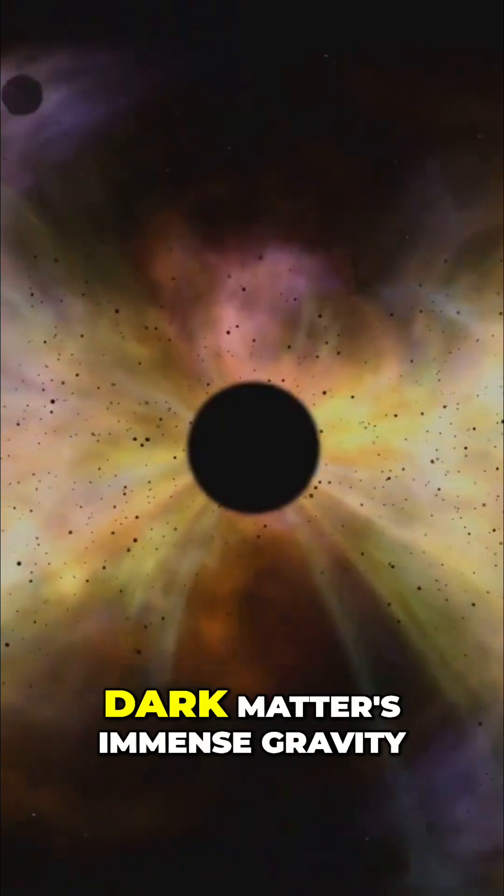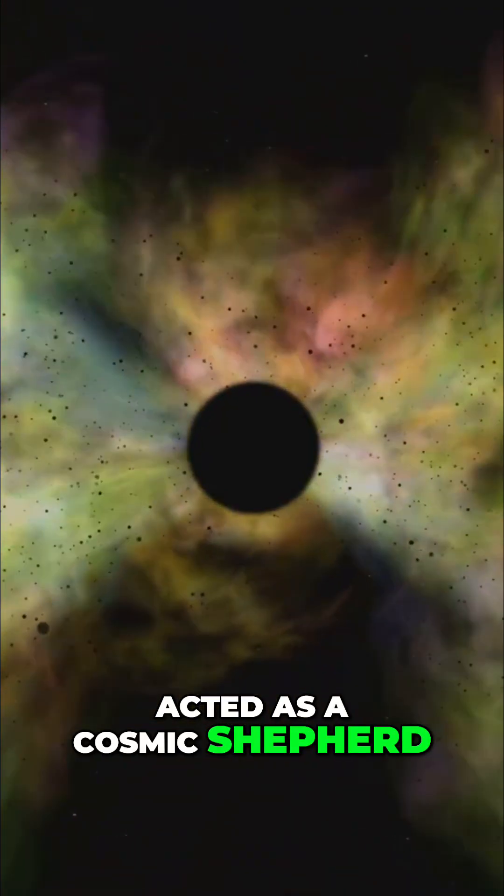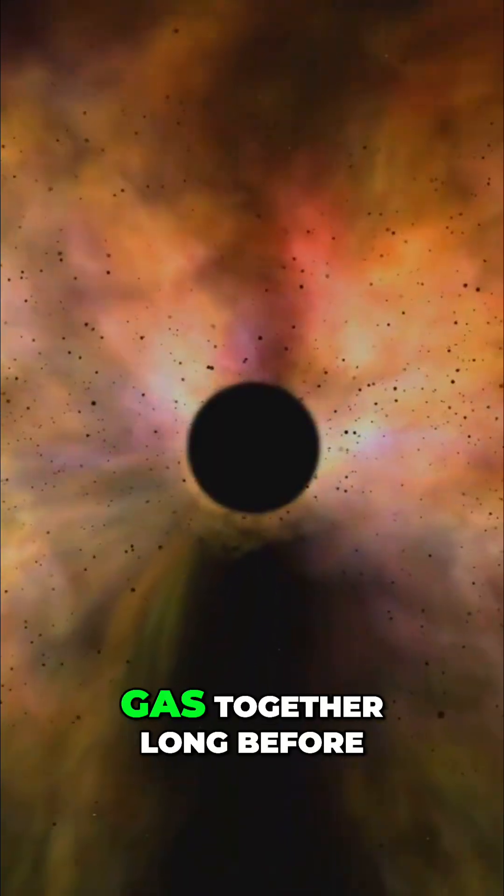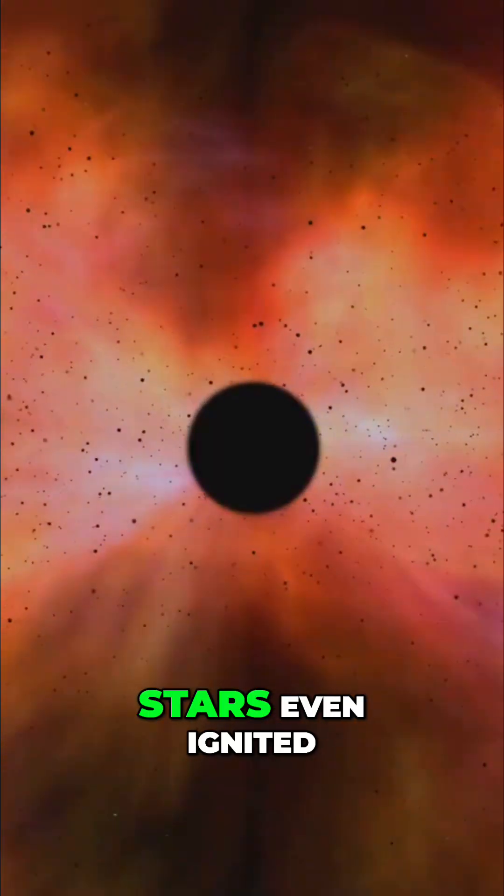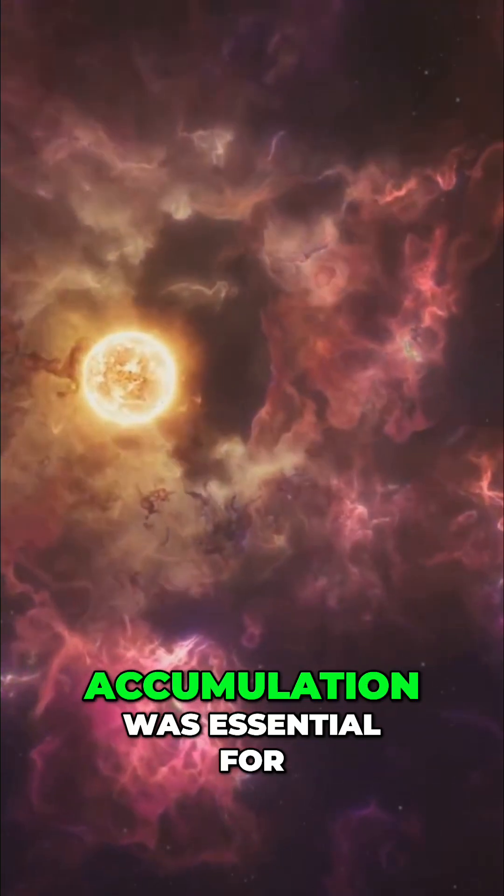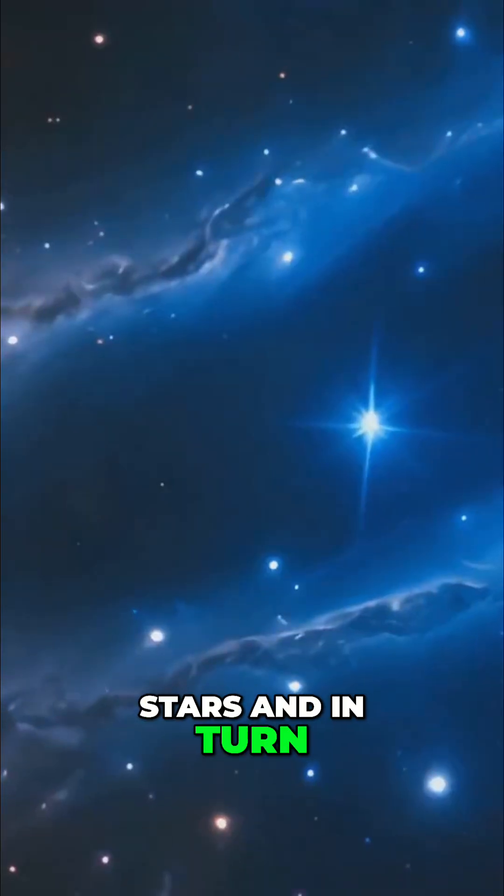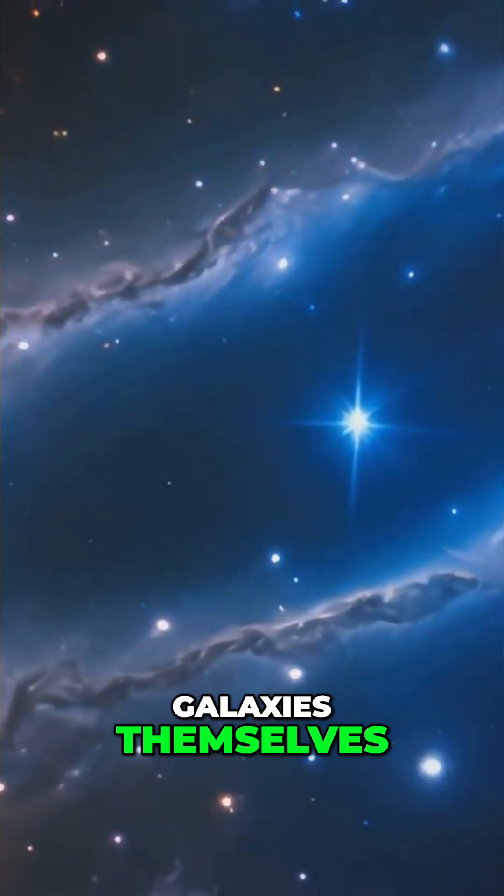In the early universe, dark matter's immense gravity acted as a cosmic shepherd, pulling vast clouds of gas together long before stars even ignited. This process of gravitational accumulation was essential for seeding the very first stars, and in turn seeding the formation of galaxies themselves.